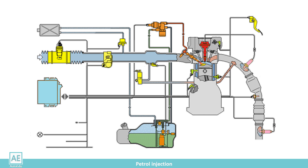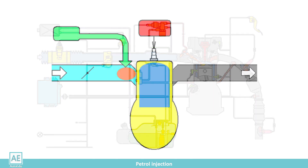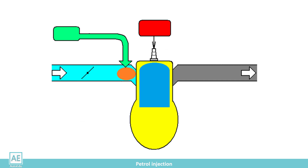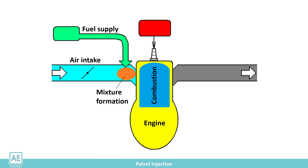All elements of the injection system that act on the same area can be grouped into subsystems: air intake, fuel supply, mixture formation, engine compartment, ignition, and exhaust.